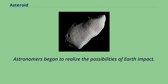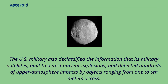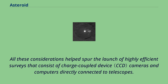Astronomers began to realize the possibilities of Earth impact. Two events in later decades increased the alarm: the increasing acceptance of the Alvarez hypothesis that an impact event resulted in the Cretaceous-Paleogene extinction, and the 1994 observation of comet Shoemaker-Levy 9 crashing into Jupiter. The U.S. military also declassified information that its military satellites, built to detect nuclear explosions, had detected hundreds of upper-atmosphere impacts by objects ranging from 1 to 10 meters across. All these considerations helped spur the launch of highly efficient surveys using charge-coupled device cameras and computers directly connected to telescopes.